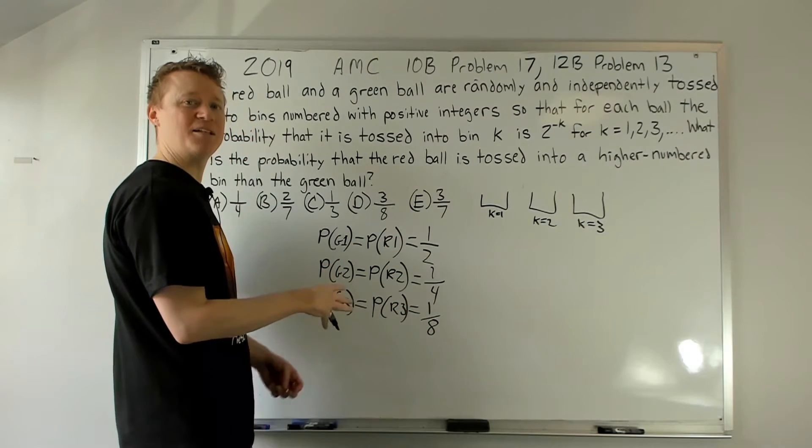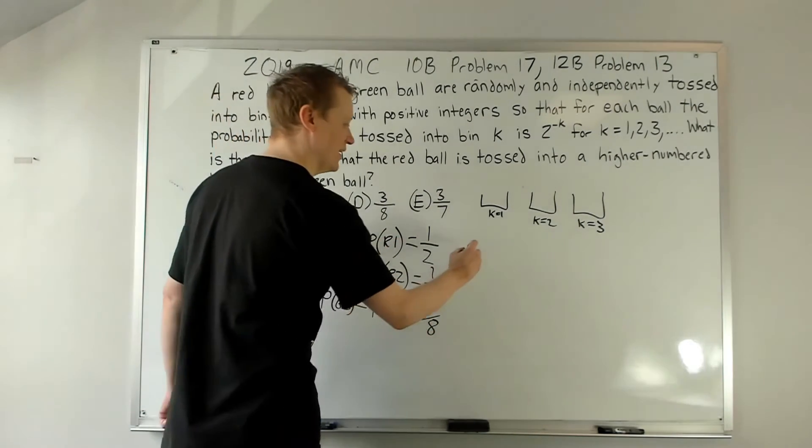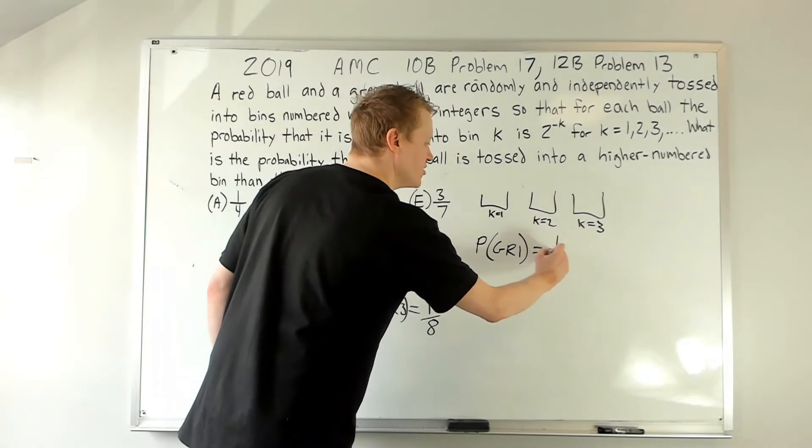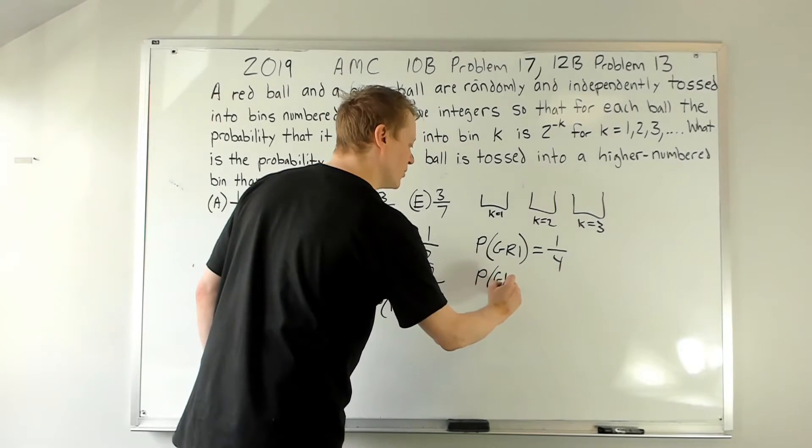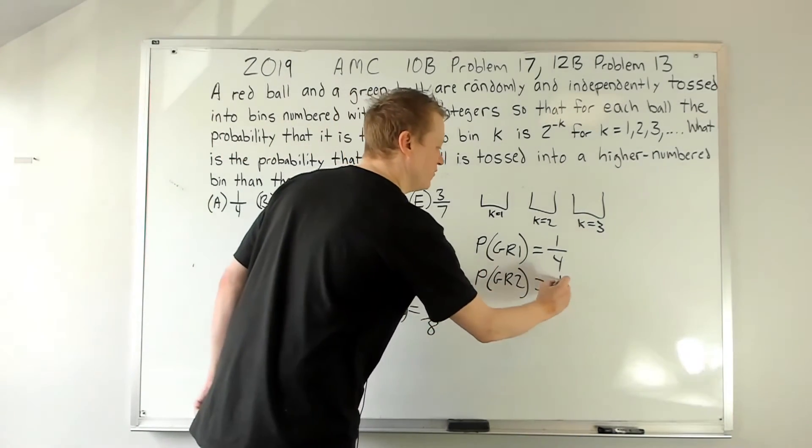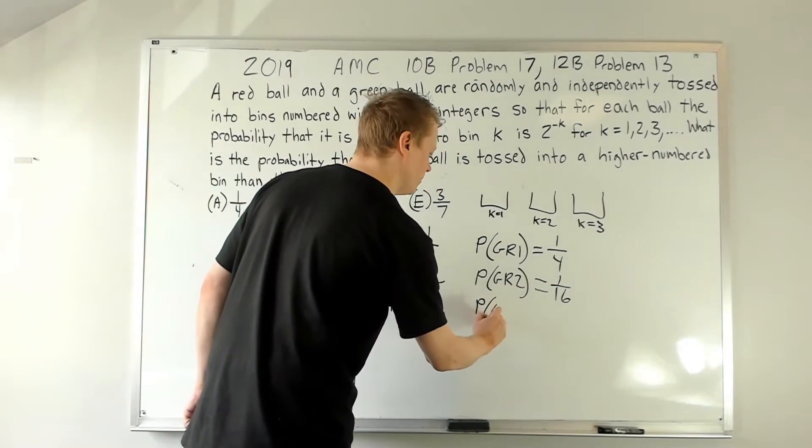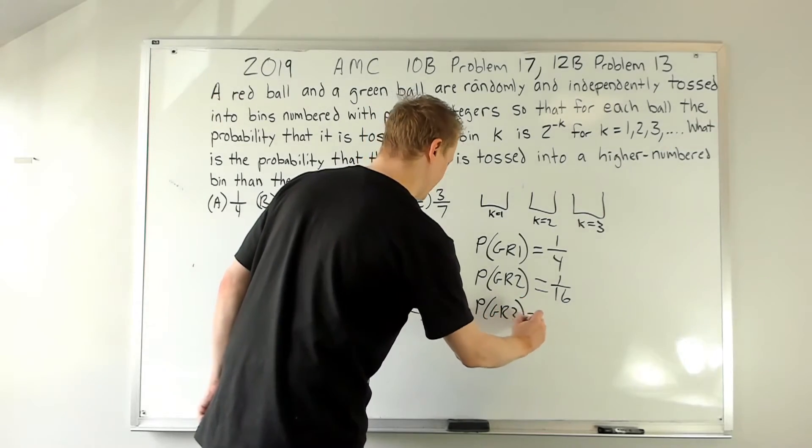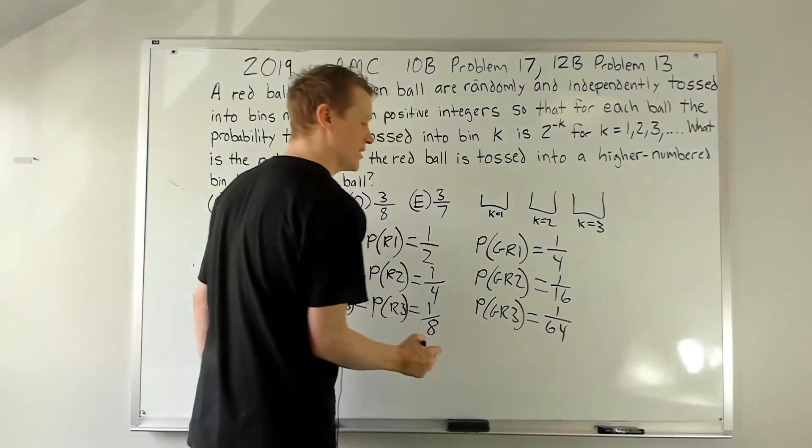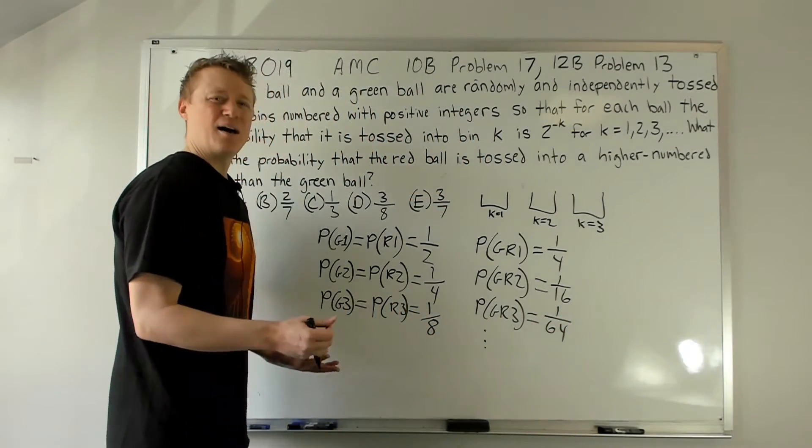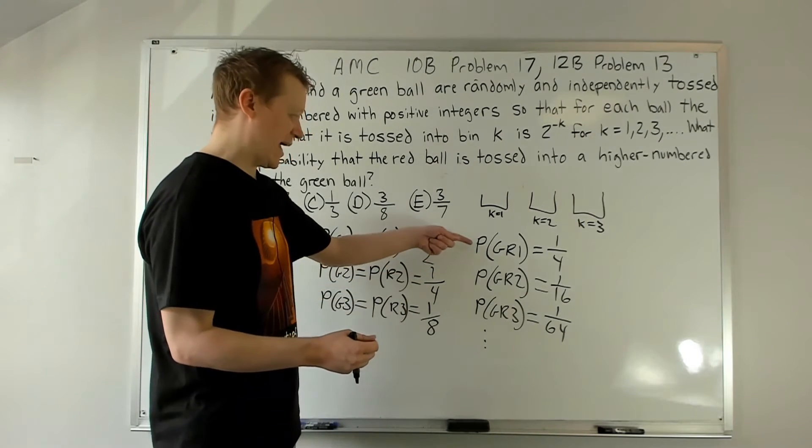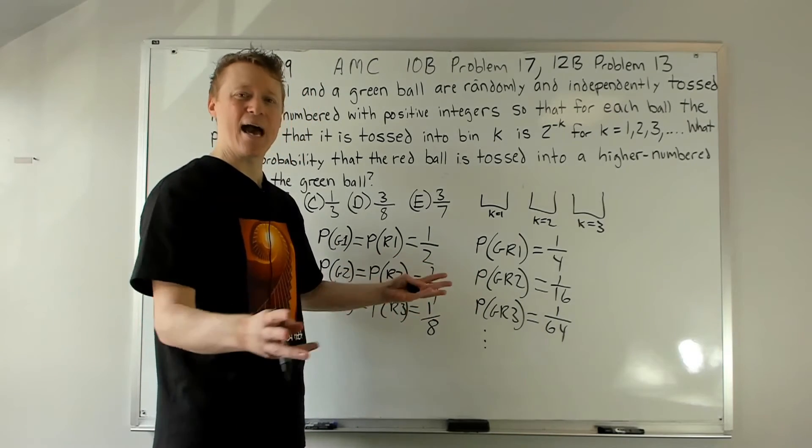So the chance that green is in one and red is in one is one half times one half. You multiply their probabilities because they're independent. So the probability of green and red both in one is one fourth. The probability of green and red both in two is one fourth times one fourth - it's one sixteenth. And the probability of green and red both in three is one eighth times one eighth, so it's one over sixty-fourth. Now this is going to go on forever.